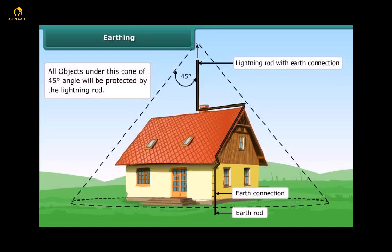Cone of protection: This is a term used to describe the volume of protection offered and it provides a simple graphical tool for installing a lightning conductor protection system. Arrangement of a lightning rod showing the cone of protection is given in the figure.